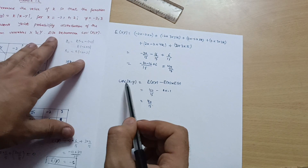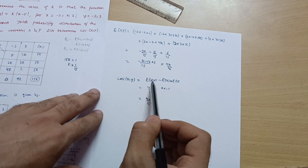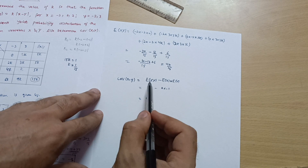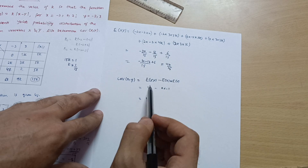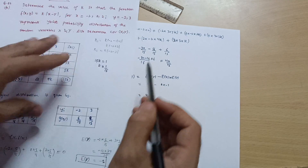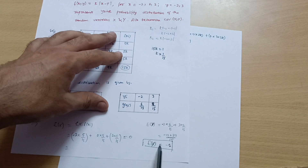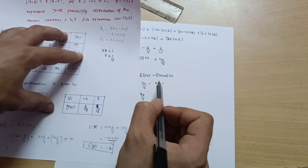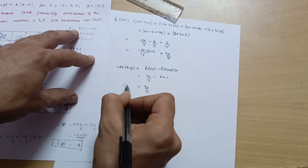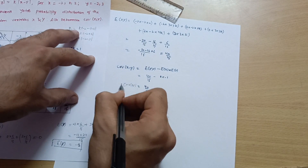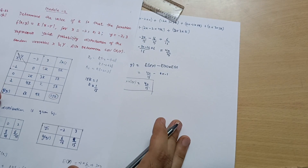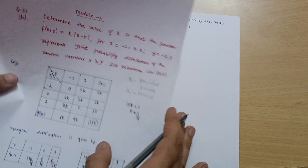Finally, Cov(X, Y) = E[XY] - E[X] * E[Y] = -40/15 - (0)(-1) = -40/15. The covariance of x and y is -40/15. I hope that is clear. Thank you.